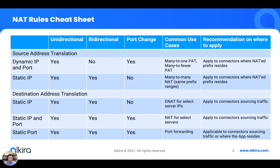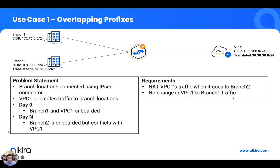Static port is similar to a port forwarding use case traditionally — you want to forward a particular port to a different port. Next, we're going to walk through a few real-world use cases and see how they're addressed and configured in Elkira. In the first use case, we have overlapping prefixes. Branch one has a 172.16 subnet, but branch two and VPC one have overlapping subnets of 10.8.100.0/24.